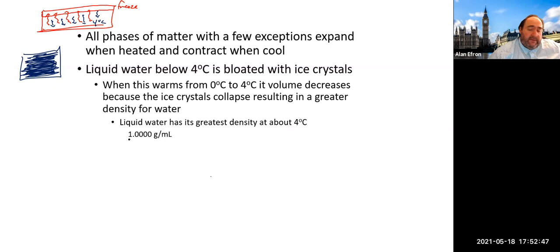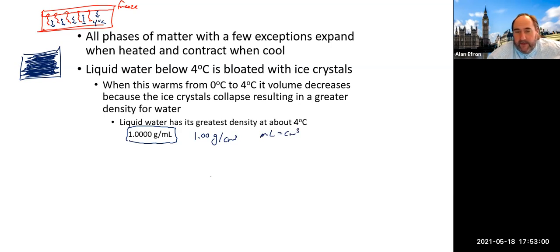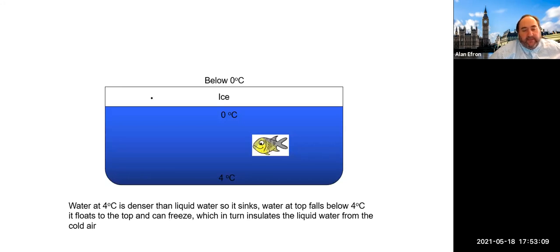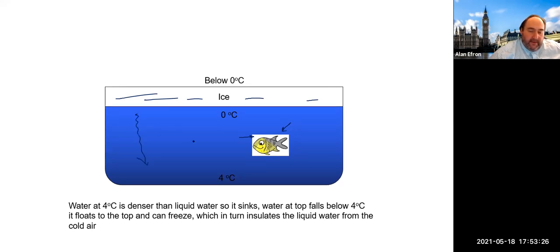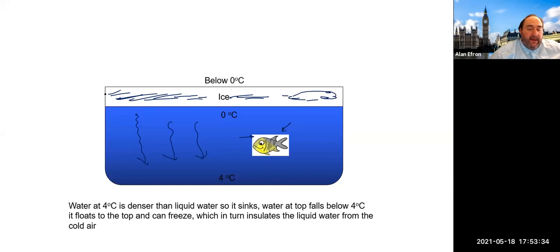The greatest density of water is about four degrees Celsius, at about one gram per milliliter, which is also one gram per cubic centimeter — a milliliter and a cubic centimeter are essentially the same. This is good for sea life, like our friend here, because the warmer water stays down below while the cooler water rises and freezes at the top, creating an insulated situation. It would be much worse if water froze from the bottom up, as anything living on the bottom would freeze solid.